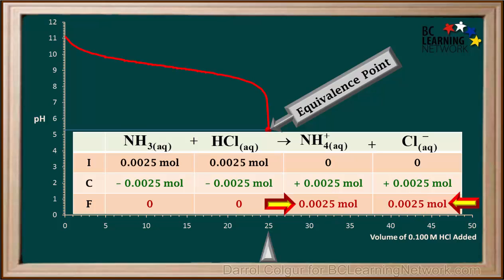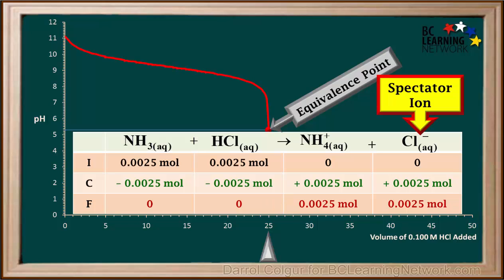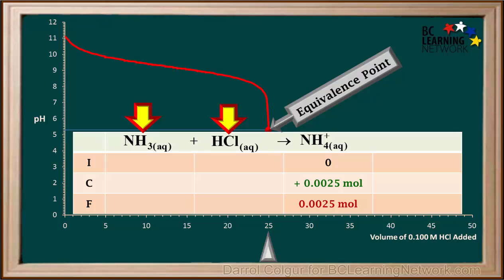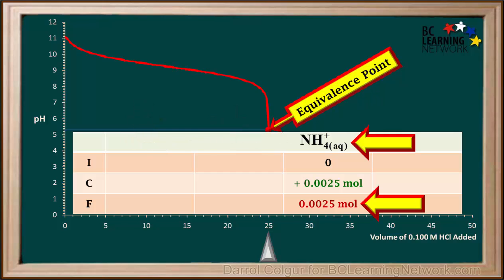So when the reaction is complete, we will have 0.0025 moles of both NH4+ and Cl-. Because the Cl- ion is the conjugate base of the strong acid HCl, it is a spectator ion and will not affect the pH, so we'll eliminate that from our table. Once the reaction at the equivalence point is complete, there is no longer any NH3 or HCl present, so we'll also eliminate these. At the equivalence point, the only thing that can affect the pH is 0.0025 moles of NH4+.